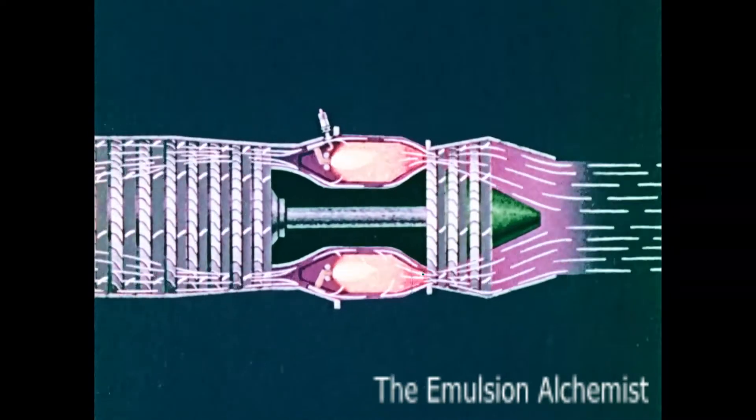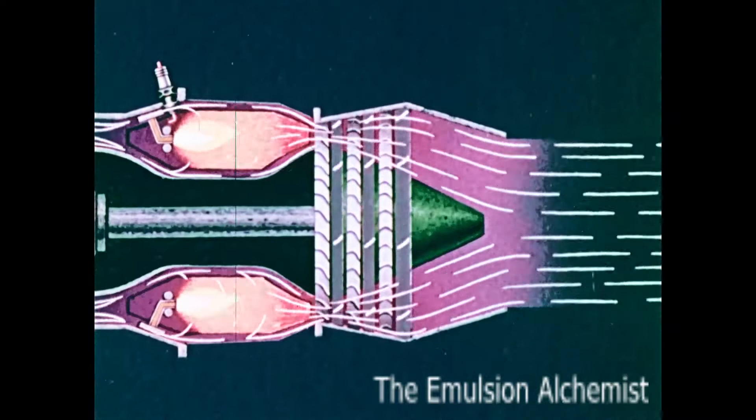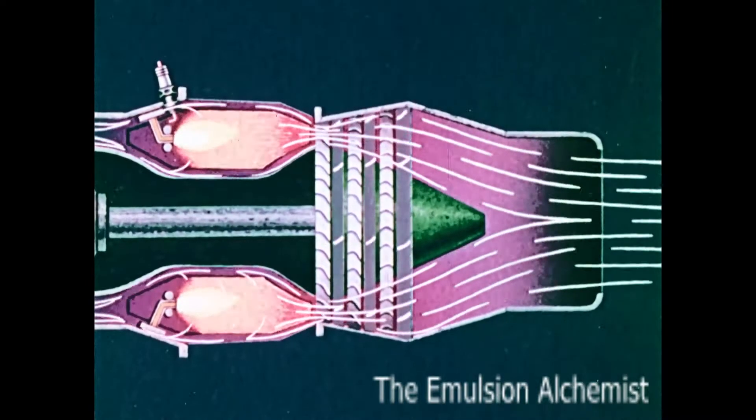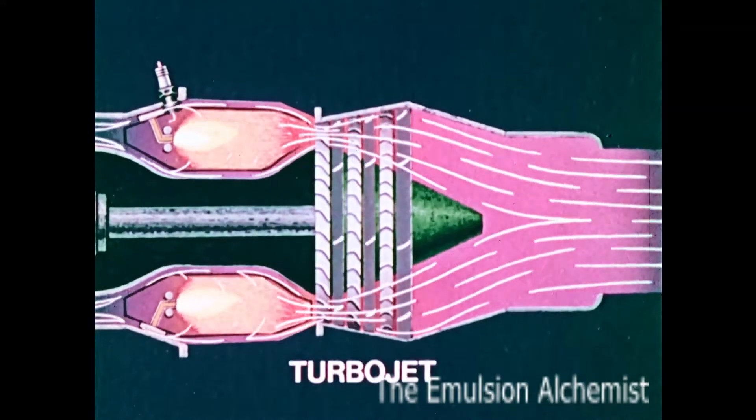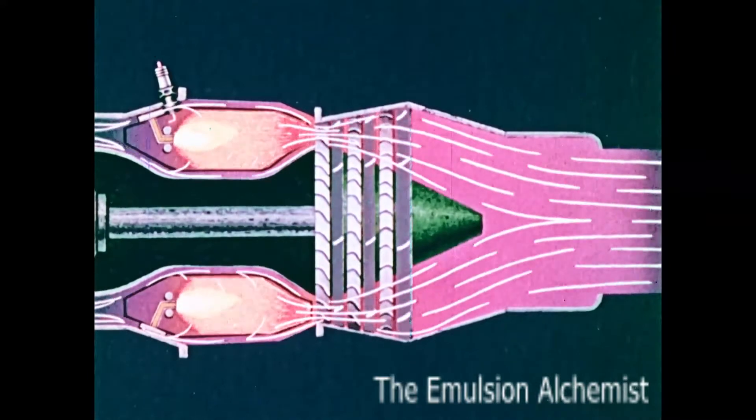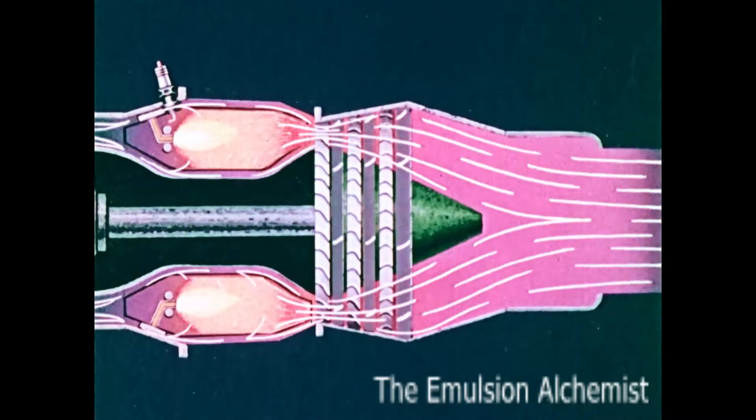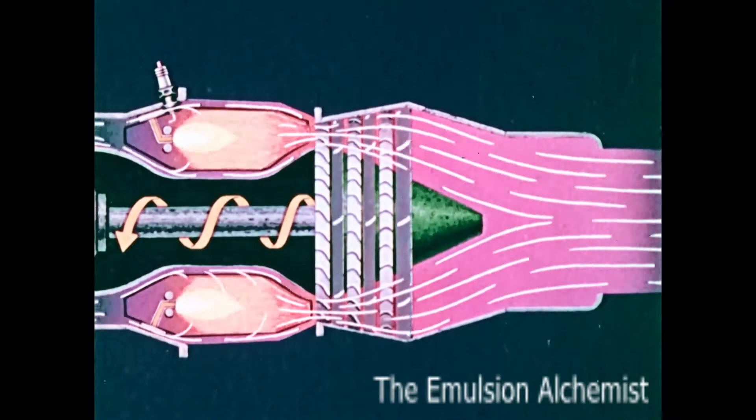The gas turbine has many useful applications. For example, if you taper the exhaust pipe so that it acts like a nozzle and speeds up the velocity of the gases, you have a turbojet engine for airplanes. The turbine extracts only enough energy to drive the compressor and accessories, leaving as much energy in the gas as possible to utilize for thrust.